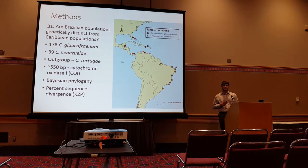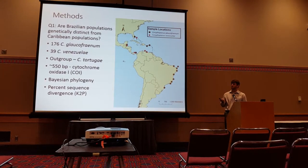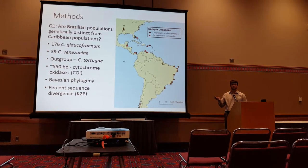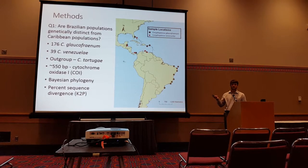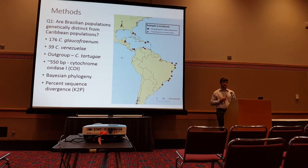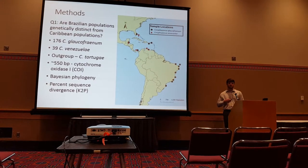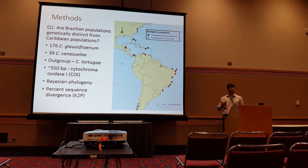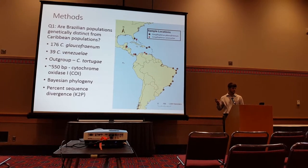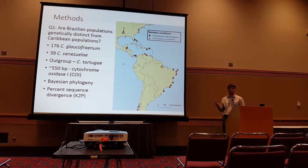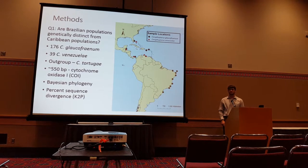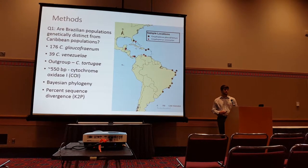I collected 176 samples of vacafranum and 39 of venezueli throughout both of their ranges, and I used Tortuguay as my outgroup. Using about a 550 base pair region of the CO1 gene, I first created a phylogeny in BEAST, and then I also calculated percent sequence divergence using the Kimura 2-parameter model.